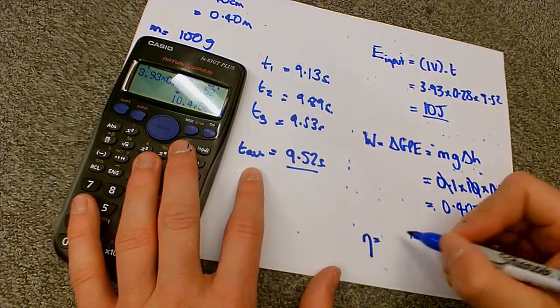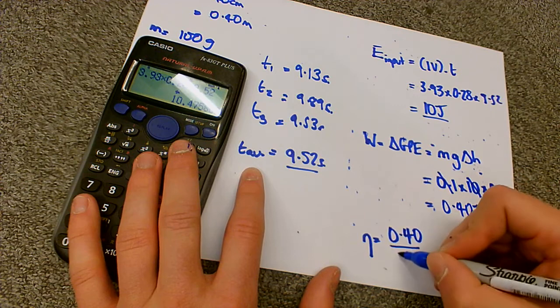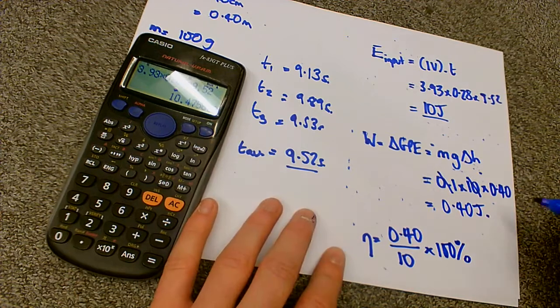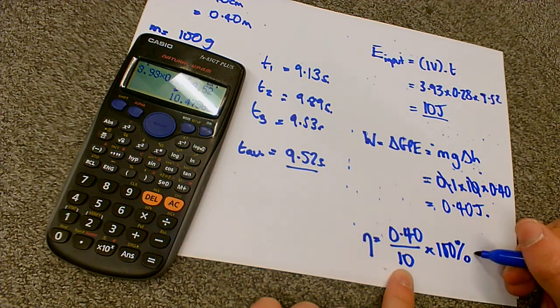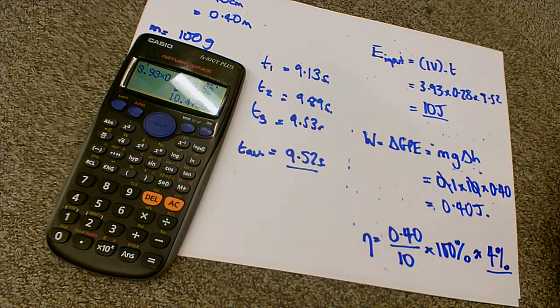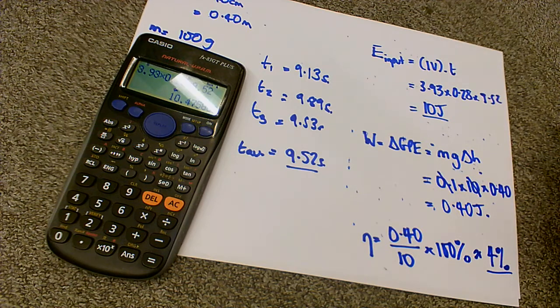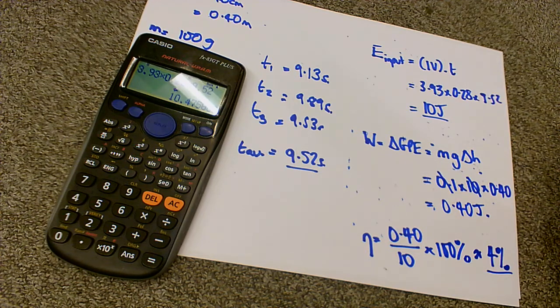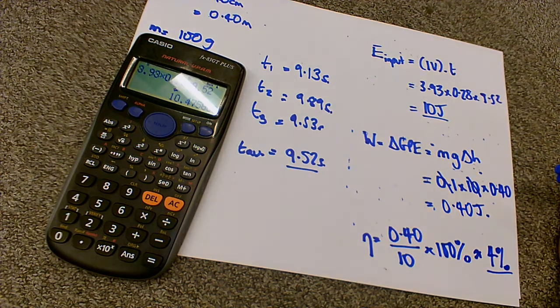So our efficiency is going to be the useful, so 0.4, divided by 10, times by 100, because I'm going to turn it into a percentage. So essentially, we're just going to times it by 10. So that's roughly 4% efficient, which, as you can probably agree, is pretty rubbish, having a motor that's 4% efficient. Motors, as a general rule, aren't very efficient. So the motors like you have in a car, so it's not an electrical motor, but it's a different type of motor, that's only about 20% efficient. So that's not too surprising that we're getting quite a low efficiency here. But that's what we've got for this motor in this case.